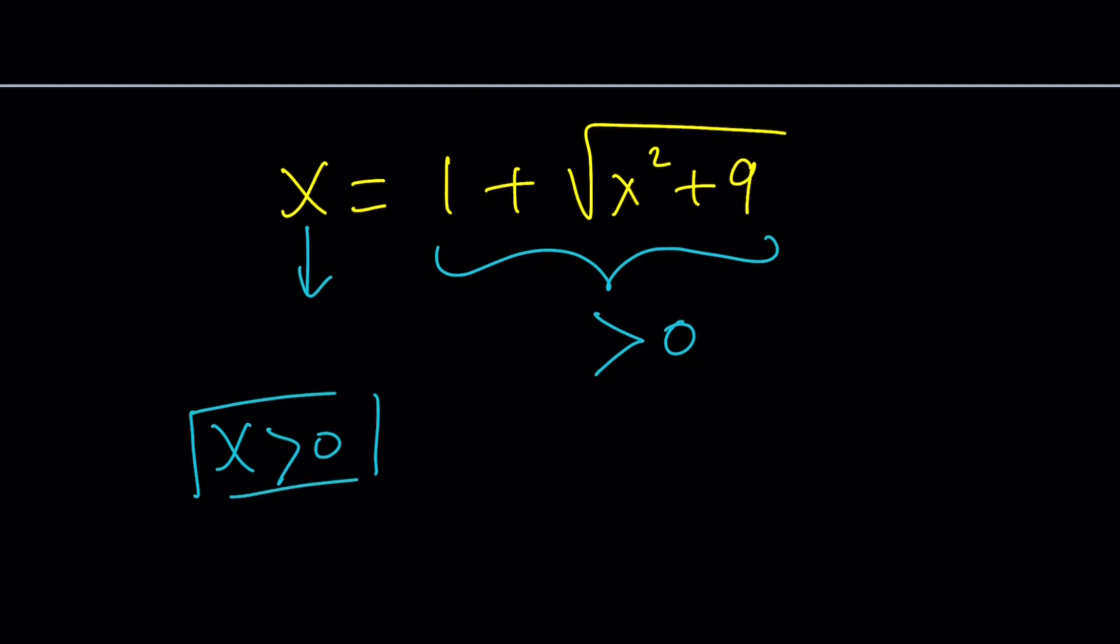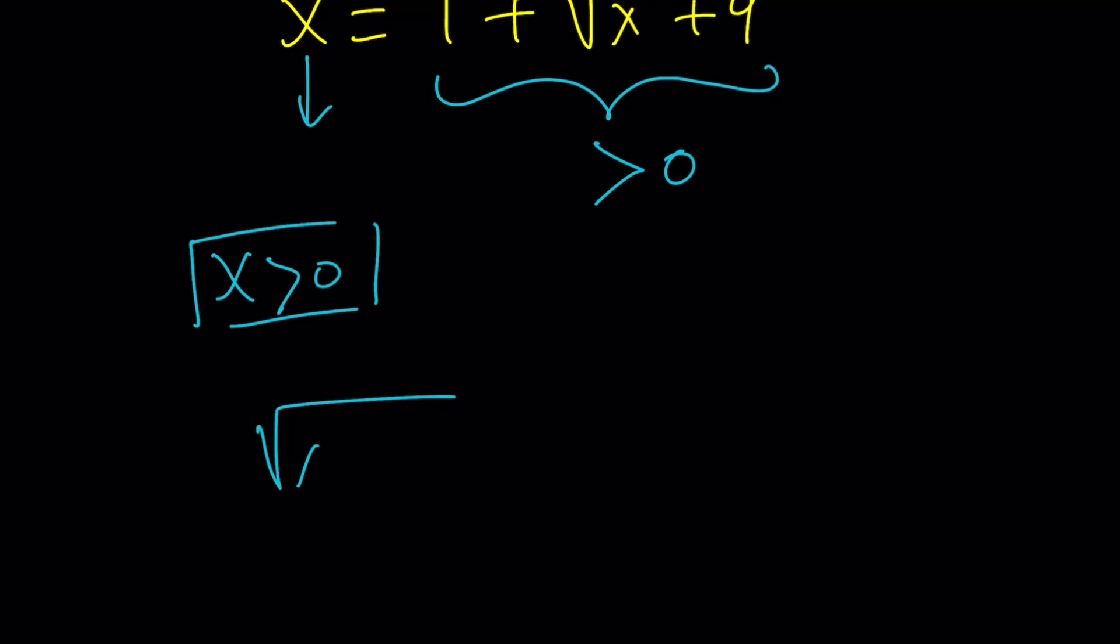Under those circumstances, think about the following. Square root of x squared plus 9 is greater than square root of x squared. Do you agree? Why? Because the expressions inside the radical is bigger.